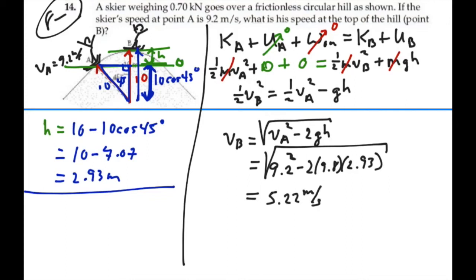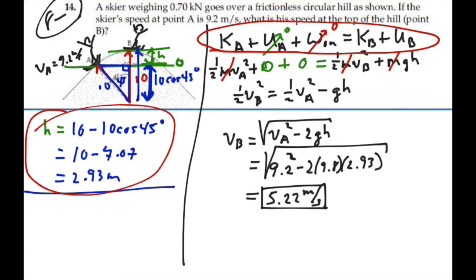So that is the velocity at point B, 5.22 meters per second. We got it by one equation to rule them all and just evaluating the terms between A and B. The key in this problem was trying to figure out what this H was. And once we got that it pretty much fell into place from the one equation to rule them all.